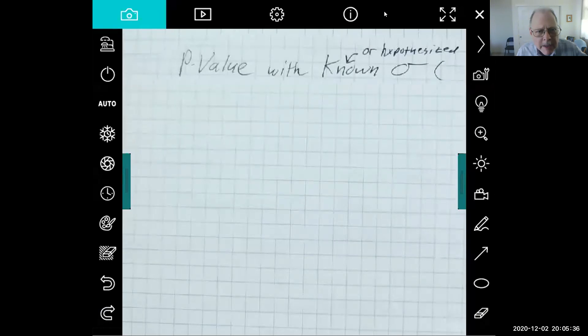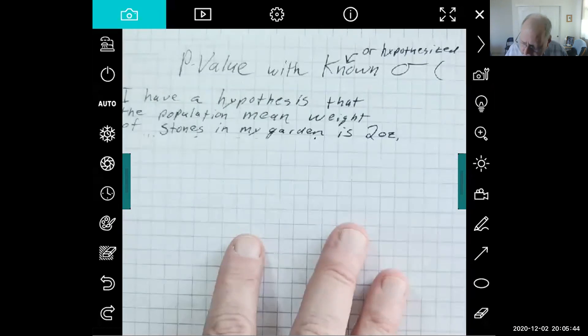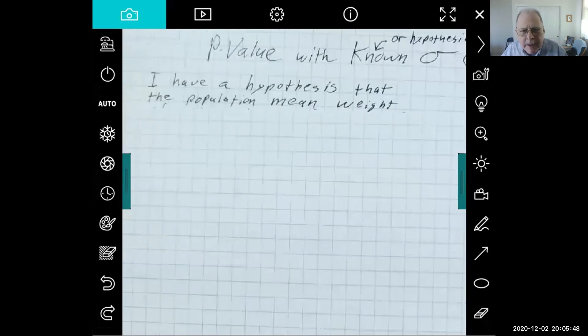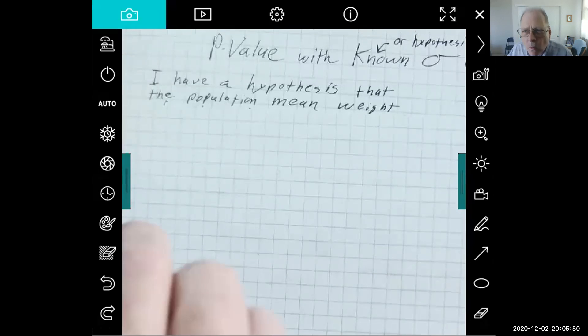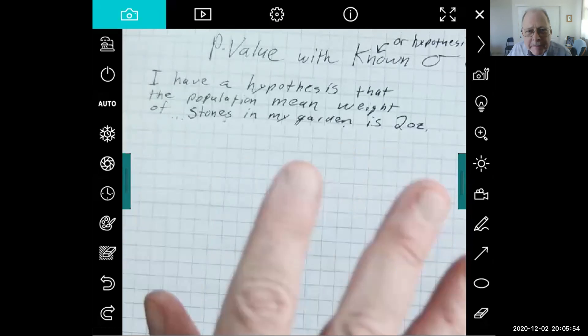I'm just going to kind of make up a problem here. So I have this hypothesis that the population mean weight of the stones in my garden is 2 ounces.